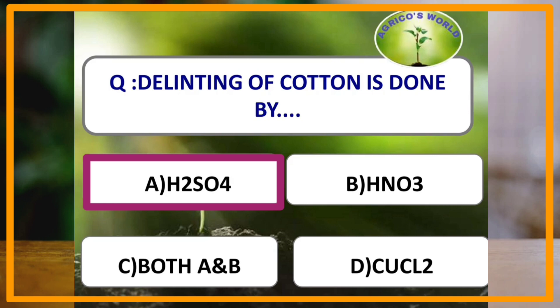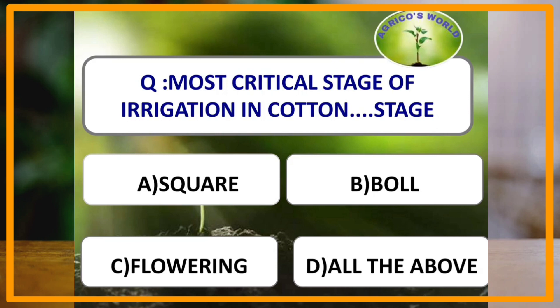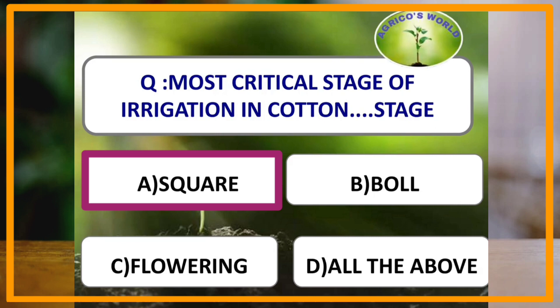The most critical stage of irrigation in cotton is the square stage. The critical stage means that if irrigation is not given properly at this stage, it would lead to a reduction in yield.